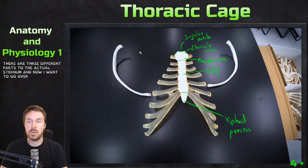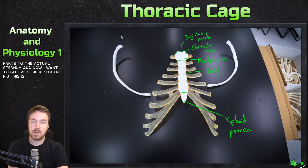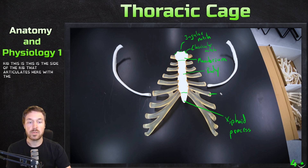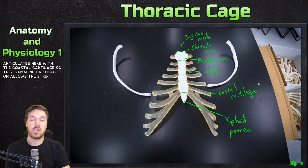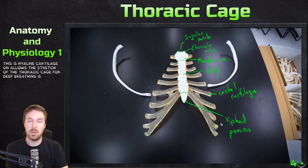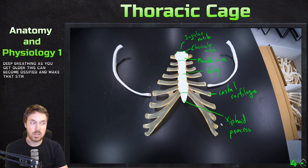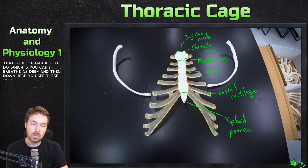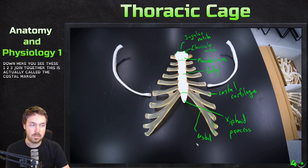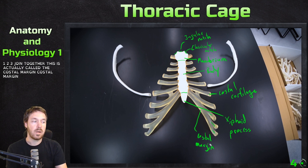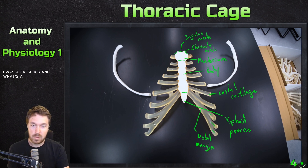Now let's go over the rib. This is the side of the rib that articulates with the costal cartilage — hyaline cartilage that allows the stretch of the thoracic cage for deep breathing. As you get older, this can become ossified, making that stretch harder, which is why you can't breathe as deeply. Down here you can see three ribs joined together; this is called the costal margin. We'll talk more about that when we discuss true ribs, false ribs, and floating ribs.